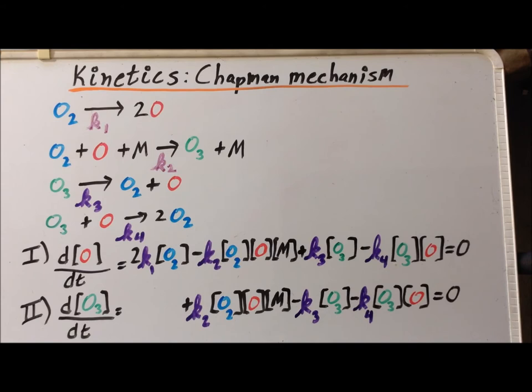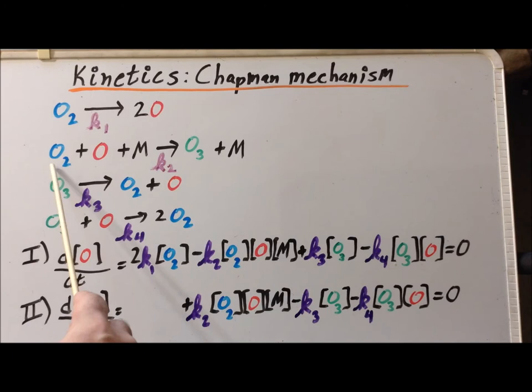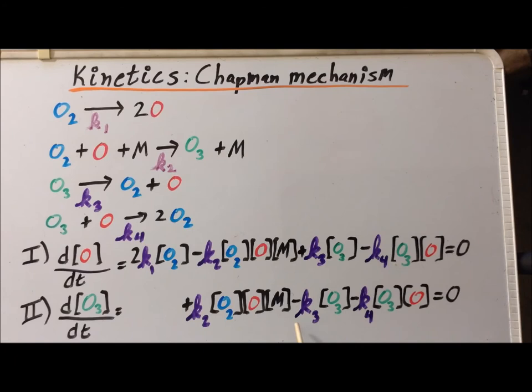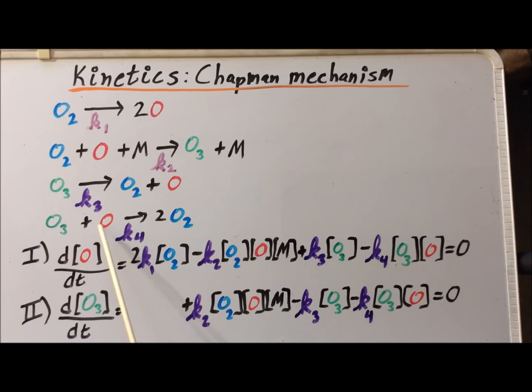For Equation II, we look at the change in the concentration of ozone per unit time. There is no change in ozone concentration in the first step. In the second step, we generate one mole of ozone: +K2·[O2]·[O]·[M]. In the third step, ozone is depleted: −K3·[O3]. In the fourth step, again ozone is depleted: −K4·[O3]·[O]. We apply the steady-state approximation and set this equal to zero.